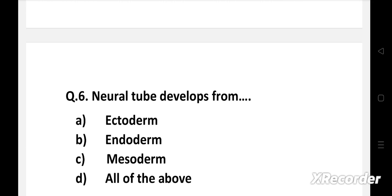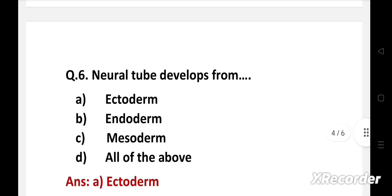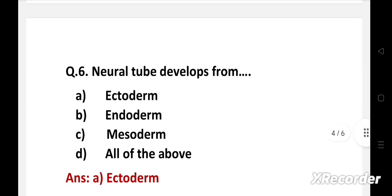Next question. Neural tube develops from: Option A: ectoderm, B: endoderm, C: mesoderm, D: all of the above. Right answer is option A: ectoderm. The neural tube develops from ectoderm at a very early stage.